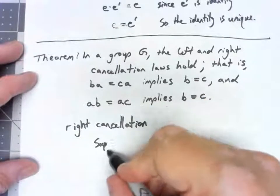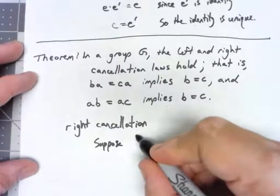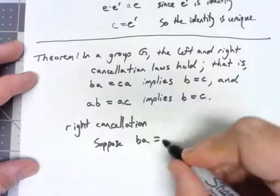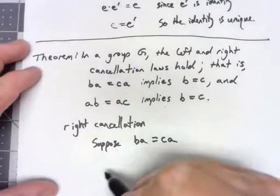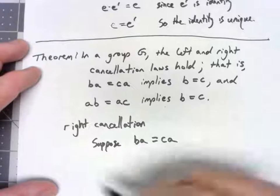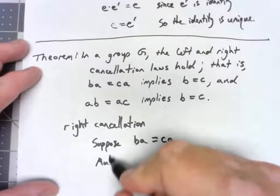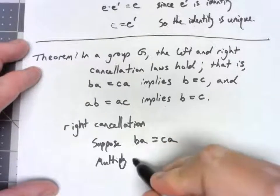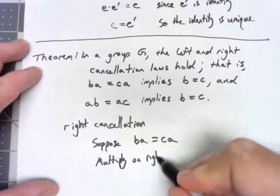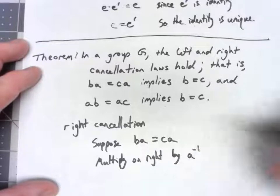So we suppose that BA is equal to CA. Well then, let's multiply on the right by A inverse.